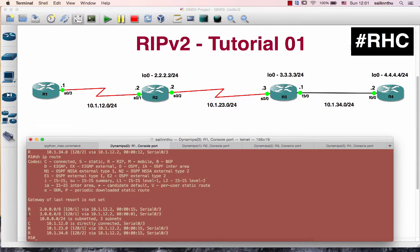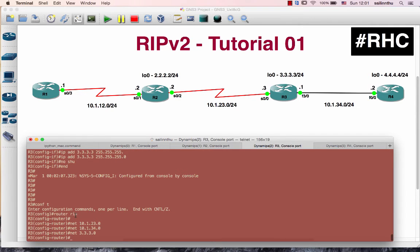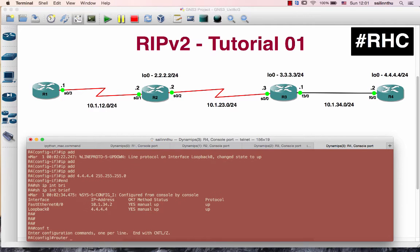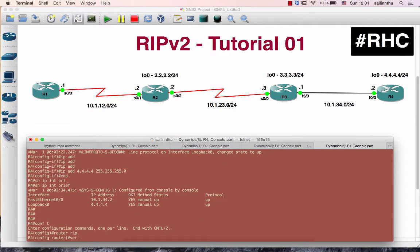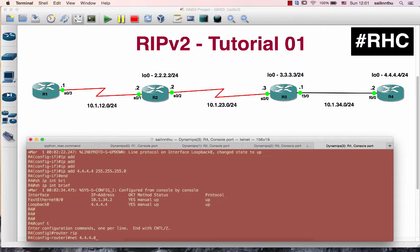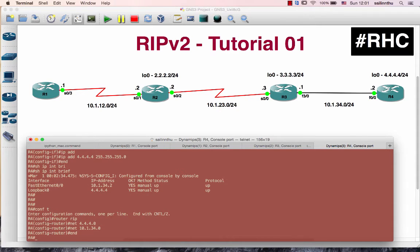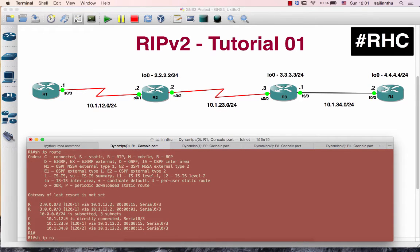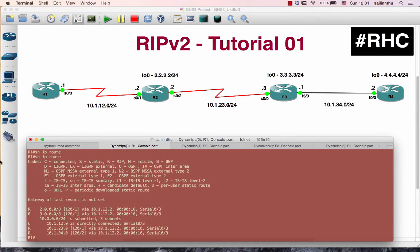Now you know that static route. All right, so let's move on to router 4. Router RIP, network 4.4.4.0, network 10.1.34.0. That's it. The RIP route is now being learned.